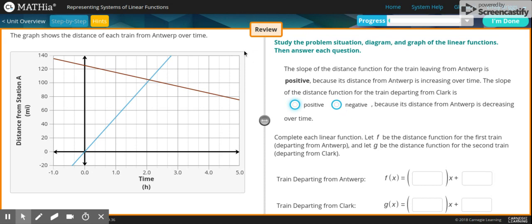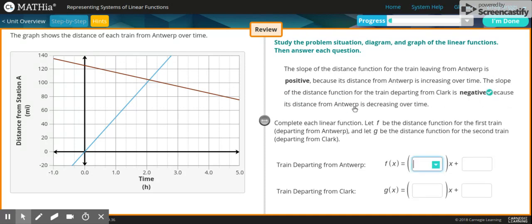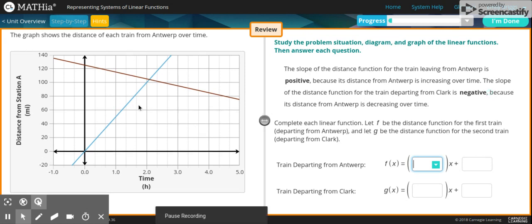The slope of the distance function for the train departing from Clark is positive or negative. So going from here to here. Because its distance from Antwerp is decreasing over time, so that means that it's negative. And sometimes it's easy to get these two confused because sometimes they don't really specify what one's Antwerp and what way they're going.